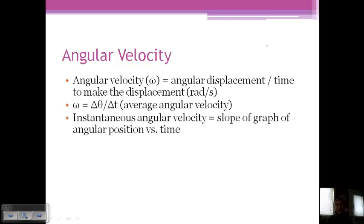To get instantaneous angular velocity, you take the slope of a graph of angular position over time. And so very similar to what we did with linear velocity, where instead of angular position, it was just the displacement over time. And then you would get the slope and that would be the velocity. Same thing here.